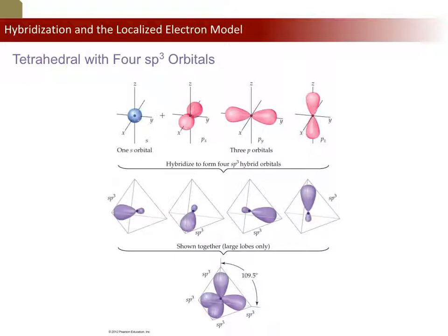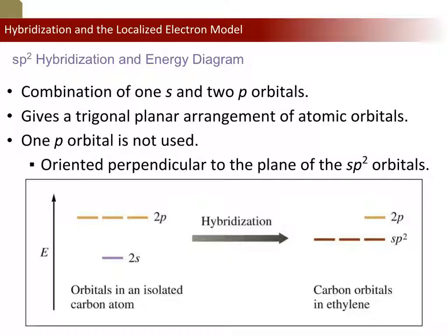Hybridization merges the concepts of quantum mechanics with VSEPR by hybridizing S and P orbitals. You might ask: can you hybridize D and F orbitals as well? Yes — that happens when you expand the octet, which we'll get to near the end. Sometimes an element doesn't want or need to hybridize all of the orbitals — only a handful of them. It seems backwards, but what we're really doing is looking at the shape first and then picking the hybridization second.